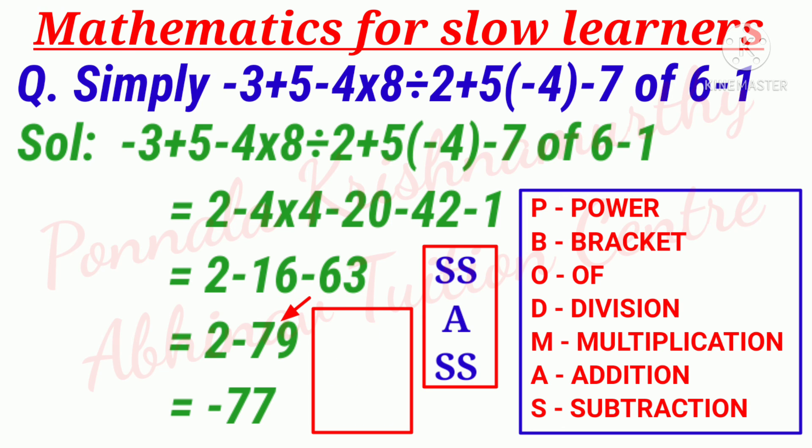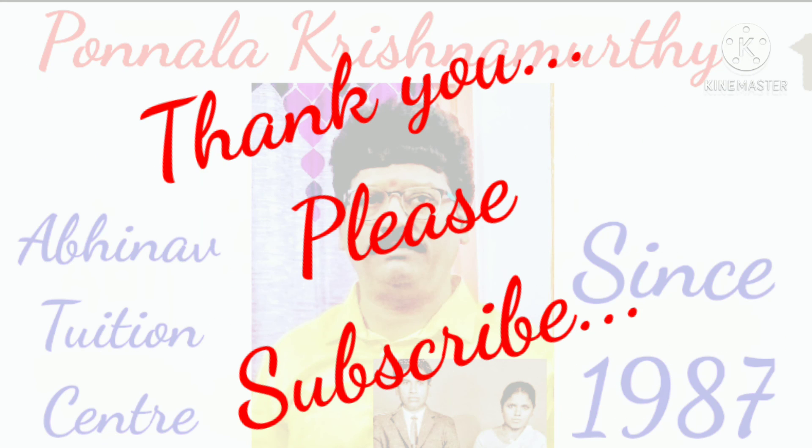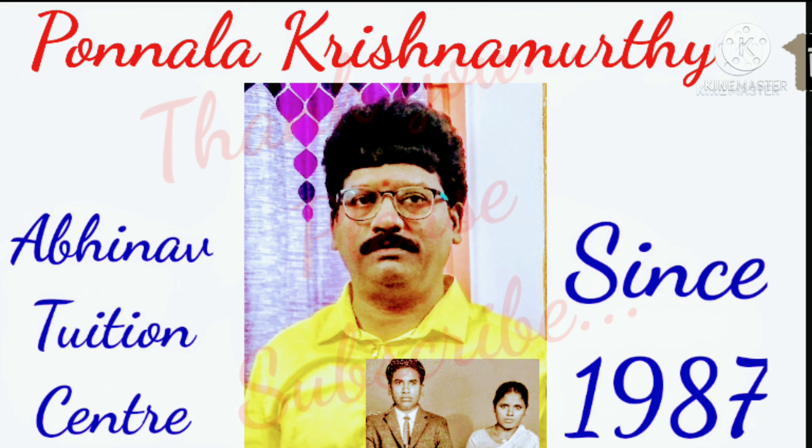That equals, different sign subtraction, bigger number sign, so 2 - 79 is -77. Answer. Thank you, please subscribe.